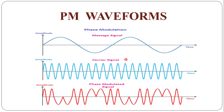This is the PM wave. Here we have a low frequency message signal, a high frequency carrier signal, and the resulting phase modulated wave where the amplitude remains constant and the frequency also appears constant. Only the phase changes — the phase of the carrier signal is varied with respect to the message signal. This is called the phase modulated wave.